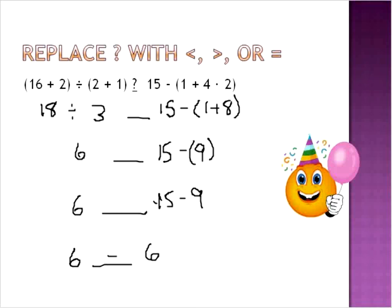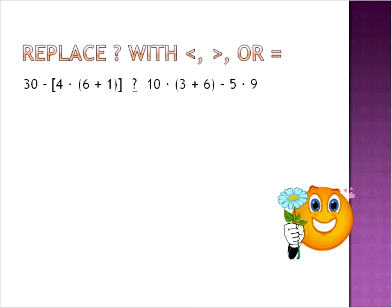So the symbol that actually goes in there will be the equal symbol. Both of these expressions on either side here are equal to each other. So we're replacing our question mark with an equal sign in this case. And all of this is just using the order of operations to solve each expression and then comparing the expressions at the end.